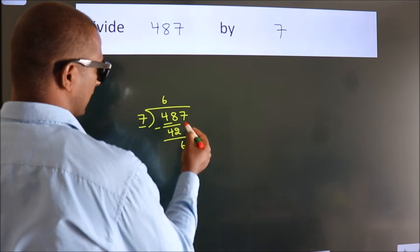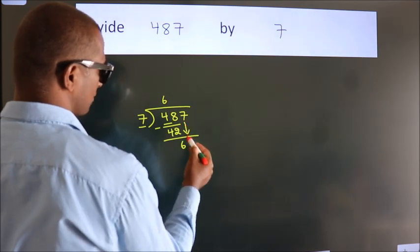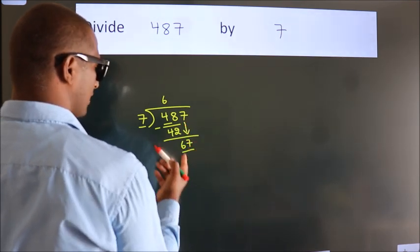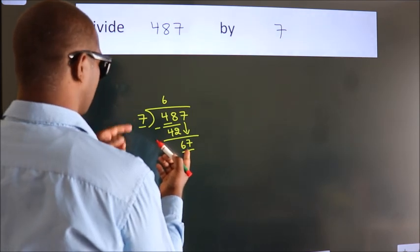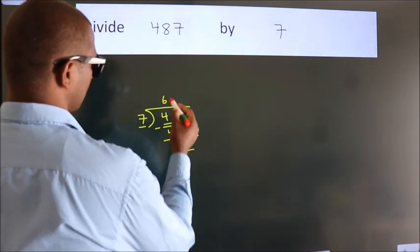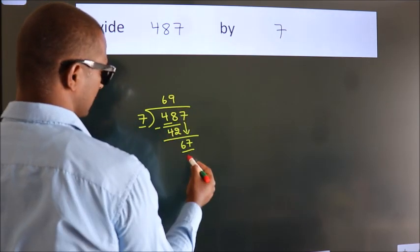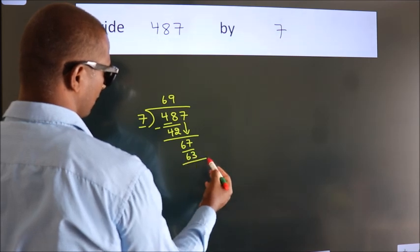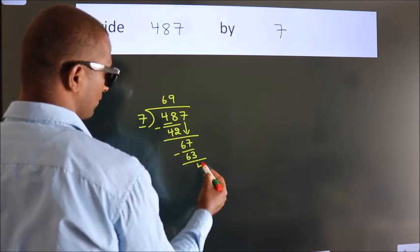After this, bring down the beside number. So 7 down, so 67. A number close to 67 in the 7 table is 7 times 9, 63. Now we subtract, we get 4.